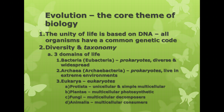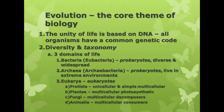The third domain is domain eukarya, composed of eukaryotes. Within domain eukarya, there are four main groups: protista, which includes mostly unicellular or simple multicellular organisms; plantae, the plants, which are multicellular photosynthetic organisms; fungi, which are multicellular decomposers; and kingdom animalia, which are multicellular consumers. We'll talk more about these in more detail later on after we get into the study of organisms.